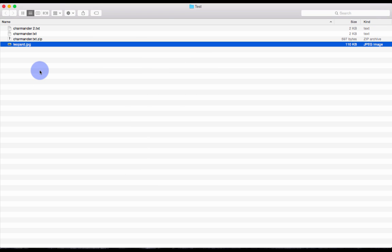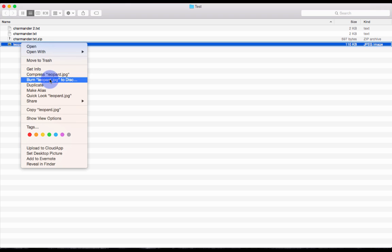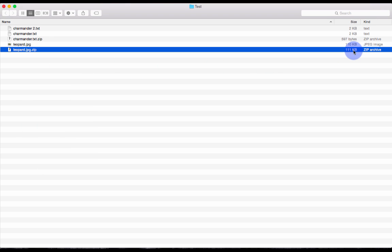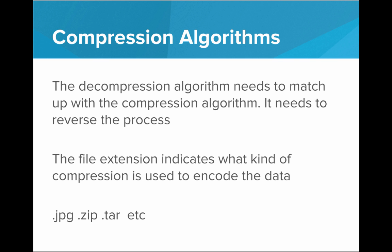We see that the .zip algorithm might actually not be good for all types of data. If I already have a compressed file, like a .JPEG, if I try to compress that with the .zip algorithm, we actually see that it got bigger. That's because the .zip algorithm is not good for JPEG files. It's great for .txt files, but not JPEGs. So we've got to keep that in mind when we're deciding which compression algorithm to use.